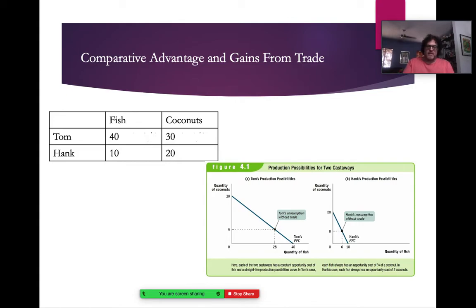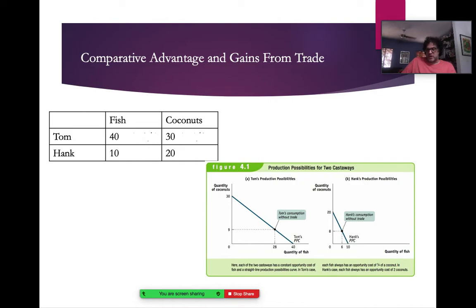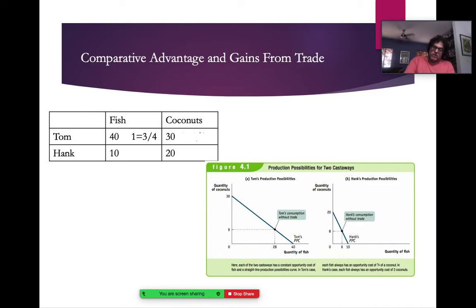First, is this an output or input problem? We're talking about fish and coconuts — final products — so it's an output problem, meaning 'other goes over.' To find Tom's opportunity cost for fish: coconuts is the other one, so other goes over fish. That gives us 30 over 40 — every time Tom catches a fish, he's giving up three-fourths of a coconut. And every time Tom picks a coconut, fish is the other one, so other goes over: 40 over 30, meaning he gives up four-thirds of a fish.